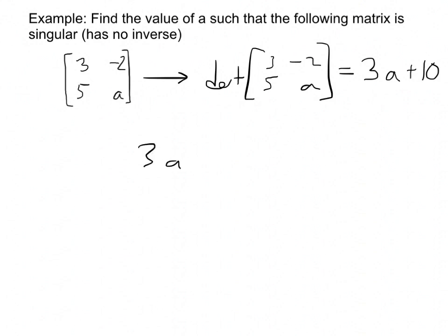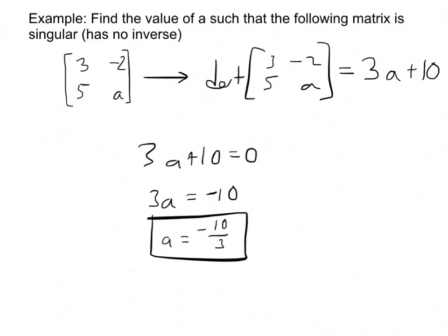If I move things around, I'll end up with A being negative 10 thirds. This is the one and only value of A such that that matrix has no inverse and is singular. Really simple question. It's basically a determinant question, but it's also wrapped up in this idea of the inverse. So if this number here were negative 10 thirds, this matrix has no inverse.